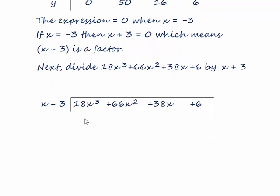Now, the first question is, what do we multiply x by to get 18x cubed? Well, obviously, 18x squared. So now we're going to multiply both terms of this factor by 18x squared, and that gives us 18x cubed plus 54x squared. We now subtract these two terms from these two terms. The 18x cubes will cancel. 66 minus 54 gives us 12x squared.